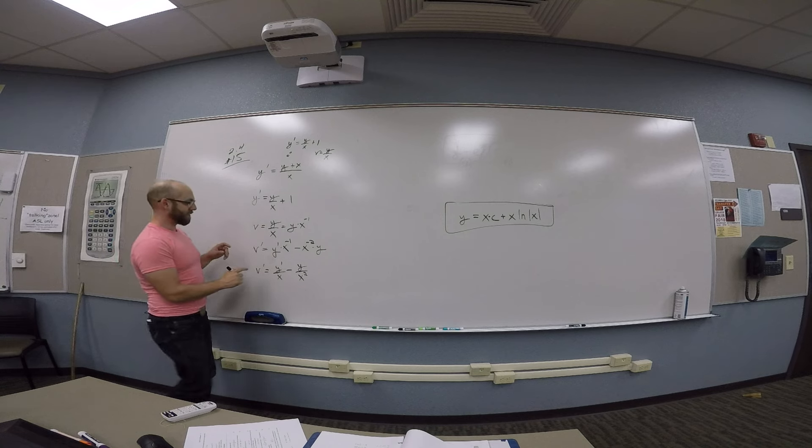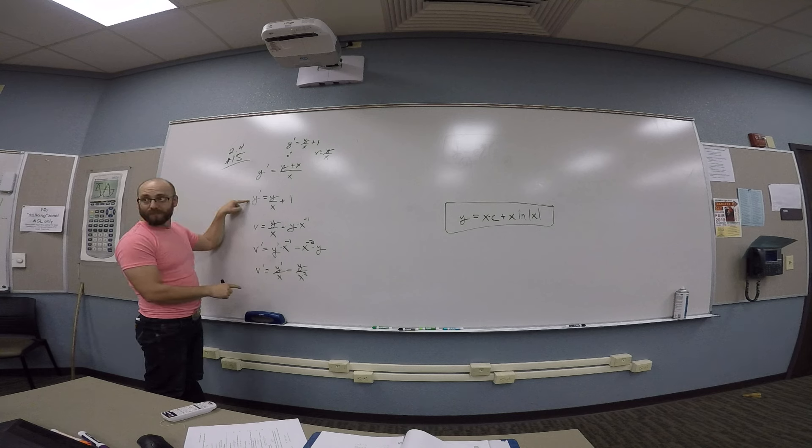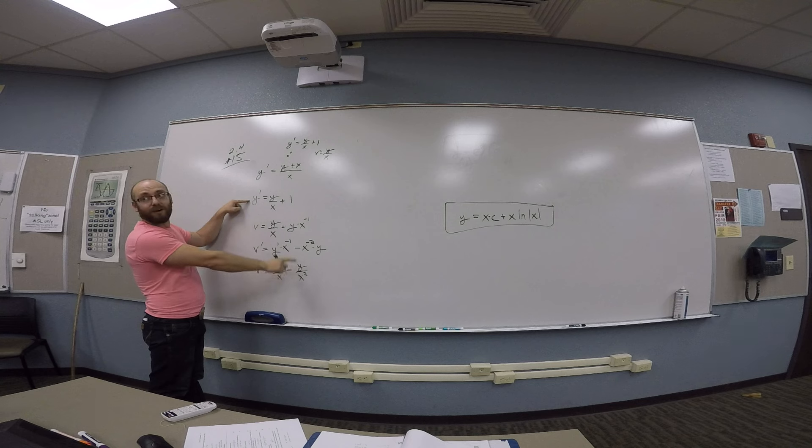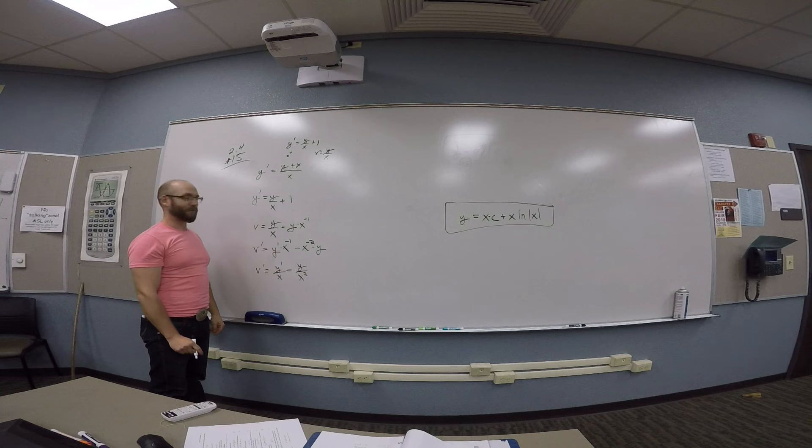Then you need to make this substitution back here to get rid of y prime. But y prime is kind of convoluted here. It's got y's in it. You solve for y prime. So you got to be a little bit careful.